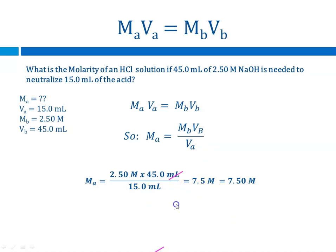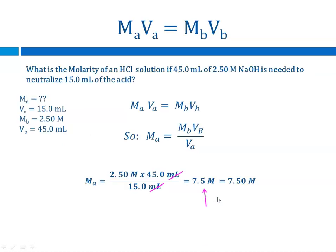First, let's make sure our units cancel. The calculator gives 7.5 molar, but we only have 2 sig figs here. Looking back, we had 3 sig figs throughout, so we need to add a zero, giving us 7.50 molar.